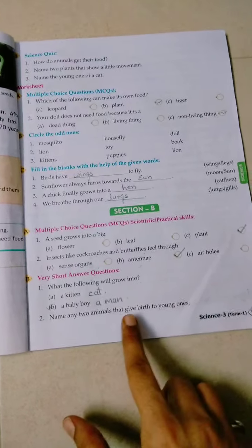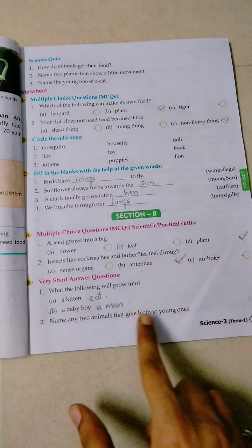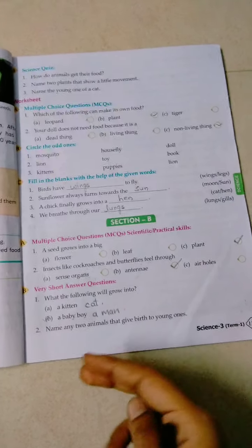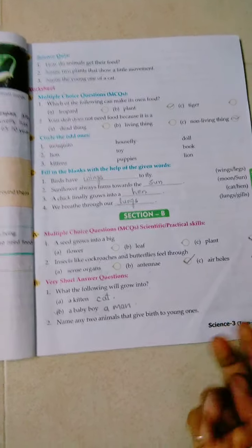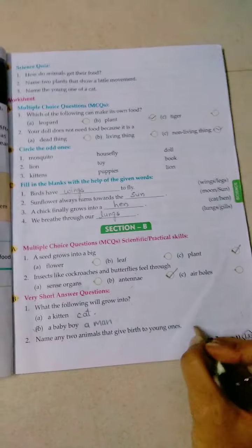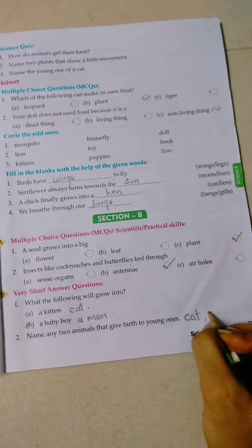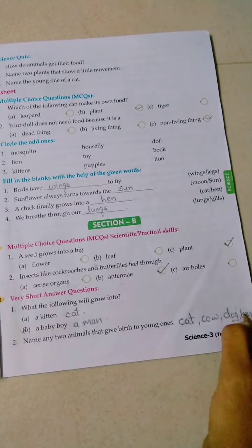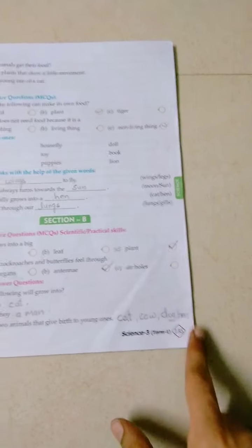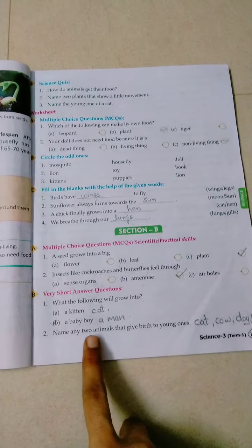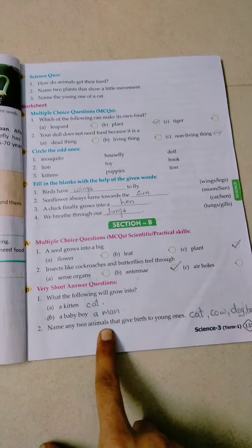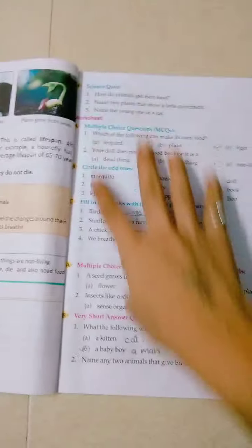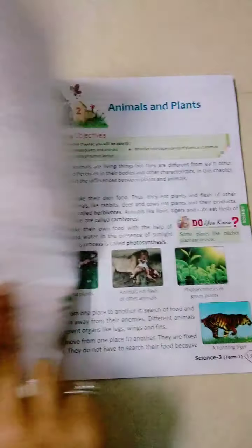Next, name any two animals that give birth to young ones. We need to name two animals that give birth to young ones. Here comes cat, cow, dog, hen - animals that give birth to young ones. Don't write humans here because animals are asked for. Humans also give birth to young ones, but since animals are asked, you have to write animal names.